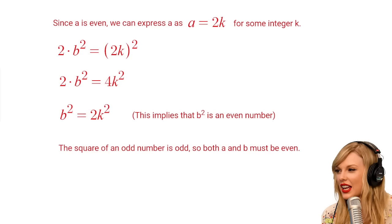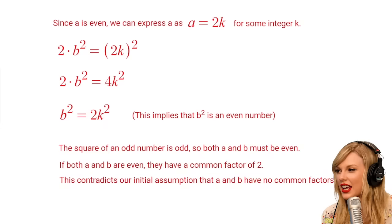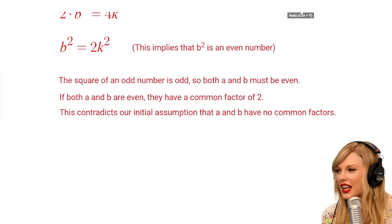So, if B is even, then both A and B are even. But if both A and B are even, they have a common factor of 2. This contradicts our initial assumption that A and B have no common factors other than 1.